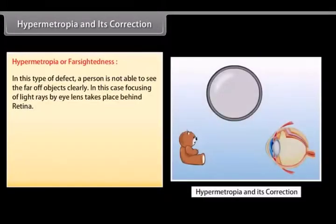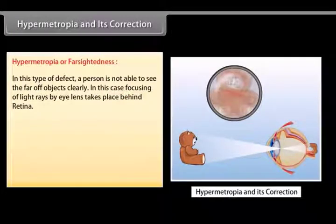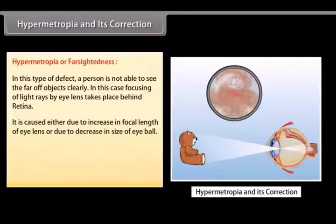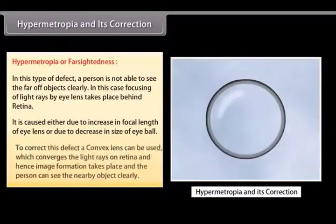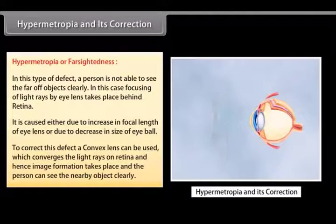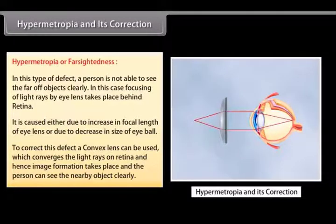Hypermetropia and its correction: In this defect, a person is not able to see nearby objects clearly. Focusing of light rays by the lens takes place behind the retina. It is caused either due to increase in focal length of the eye lens or due to decrease in size of the eyeball. To correct this defect, a convex lens is used which converges the light rays on the retina, and hence image formation takes place and the person can see the nearby object clearly.